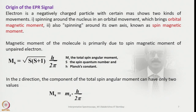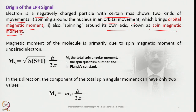The origin of the EPR signal: an electron is a negatively charged particle with a certain mass that shows two kinds of movement — spinning around the nucleus in an orbital movement, which brings orbital magnetic moment, and spinning around its own axis, known as spin magnetic moment. The magnetic moment of the molecule is primarily due to the spin magnetic moment of the unpaired electron, given by mₛ = √(S(S+1)) × h/2π.